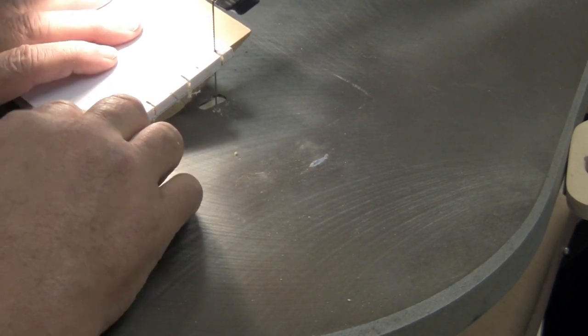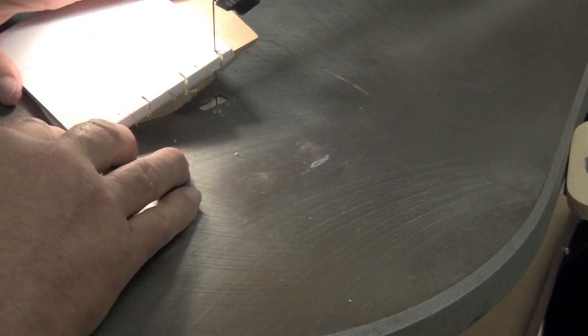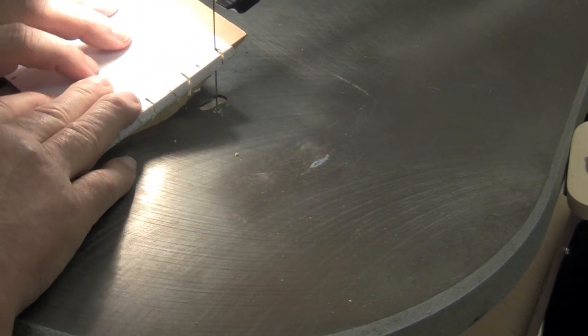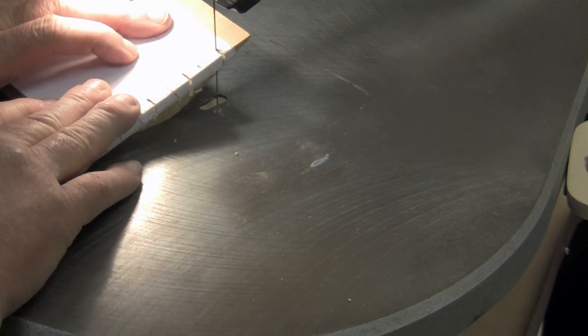Now then comes the part where you're going to remove the waste material on the pen. And that's also an angle, right? That's at two angles. And I want to see you try this by tilting your table.